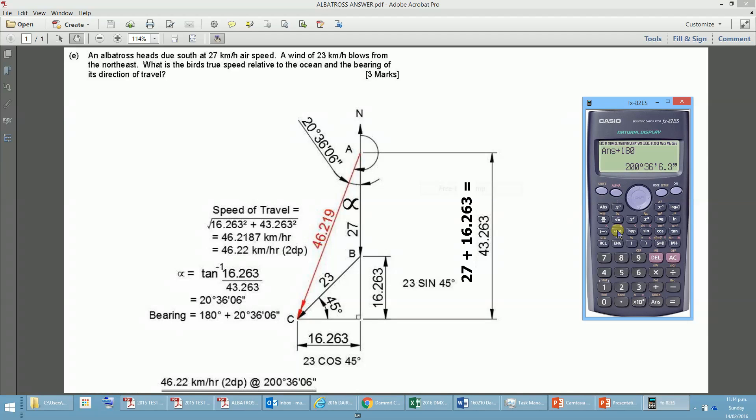So then I've written that down the bottom there, so the albatross is flying at a speed of 46.22 kilometers per hour, at a bearing of 200 degrees, 36 minutes and 6 seconds.